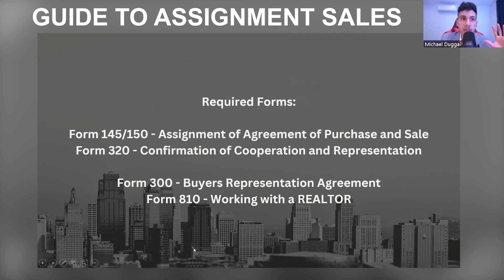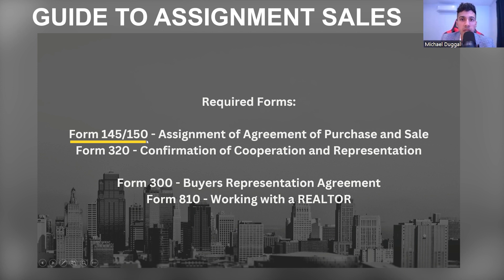Let's take a look at the required forms throughout the transaction. So I put here form 145 or 150. This is going to depend whether it's a freehold property or it's a condominium. If it is a condominium, the difference is that there is an occupancy period. If you're buying a detached property on assignment, there's no occupancy period — you have your assignment closing and then your final closing. Next, we have form 320, the confirmation of cooperation and representation, which structures out the commission. Normally we are going to have a buyer representation agreement and an 'are working with a realtor' form.